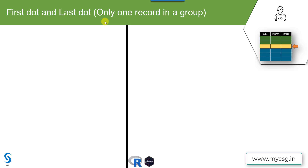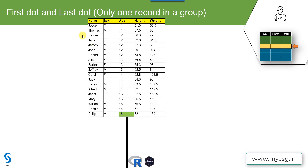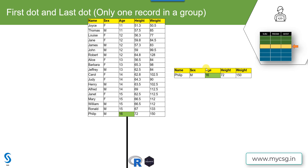Here we want to identify the groups in which there is only one record. We have data for 19 students in a class, and the age values are 11, 12, 13, 14, 15, and 16. The requirement is to identify if there is any age group in which there is only one student — in all other age groups we have at least two records, but only in the age 16 group do we have just one student.